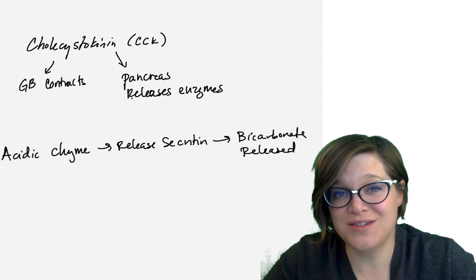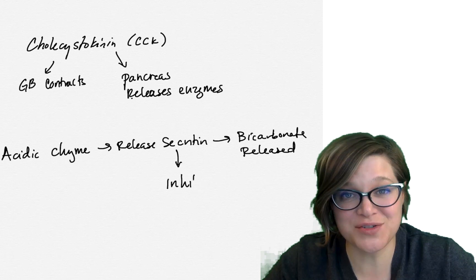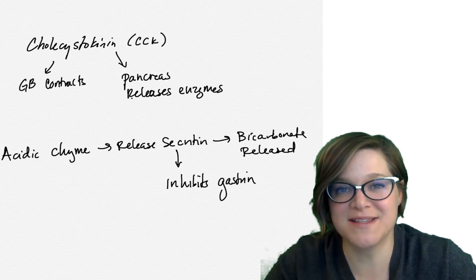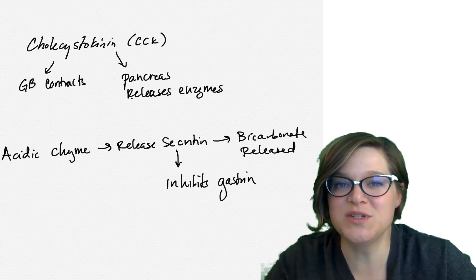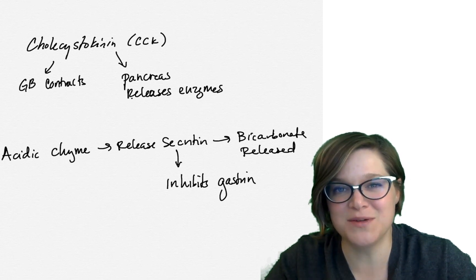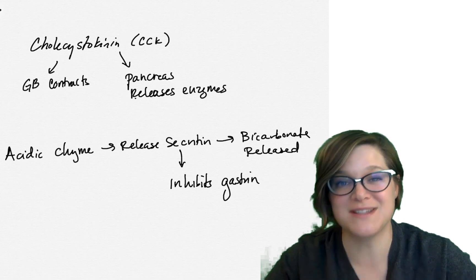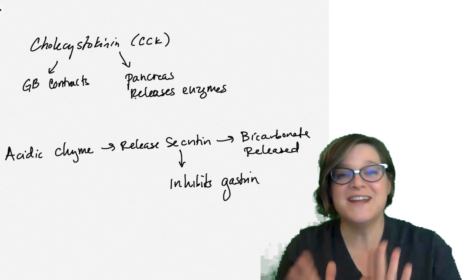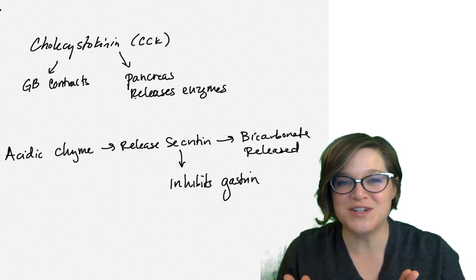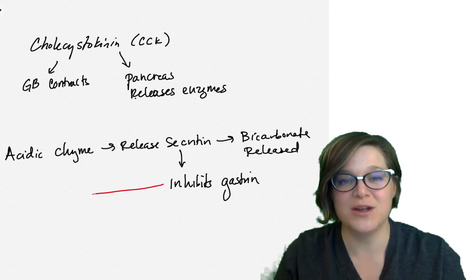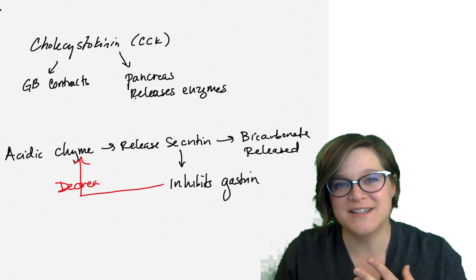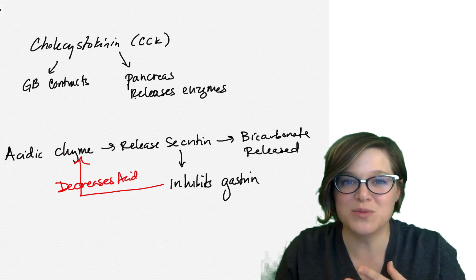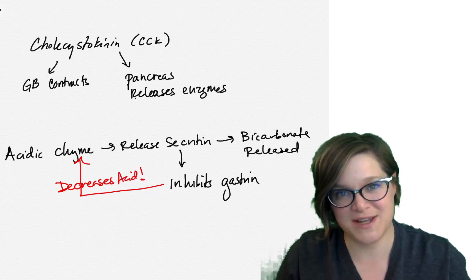In addition, secretin also inhibits the secretion of gastrin. Remember, gastrin is the hormone that has the stomach make acid in the first place. So basically what's going on is once you get acidic chyme in the duodenum, the duodenum is sending a signal via the pancreas that says, whoa, stomach, all right, stop with the digestive juice secretions. We're working on things here. Please don't send us anymore. And that gives the intestines time to work and break down the food with those enzymes.